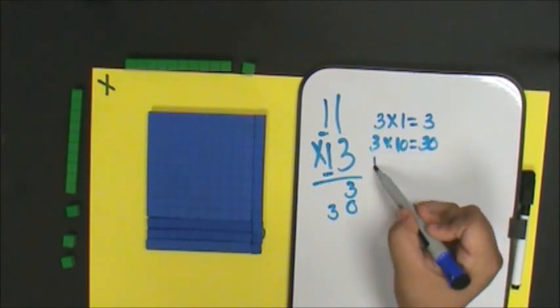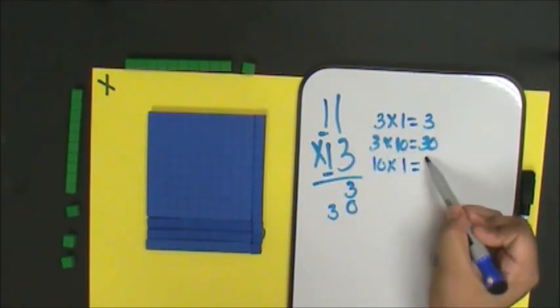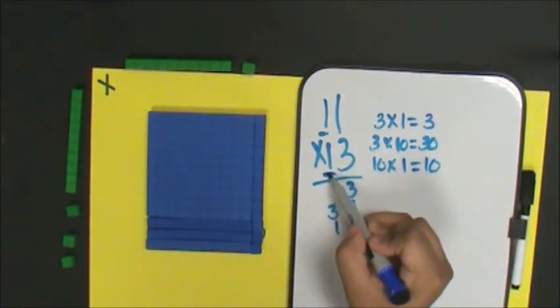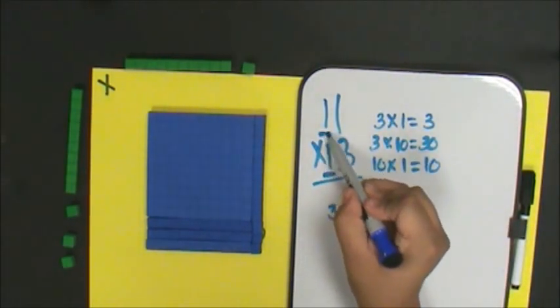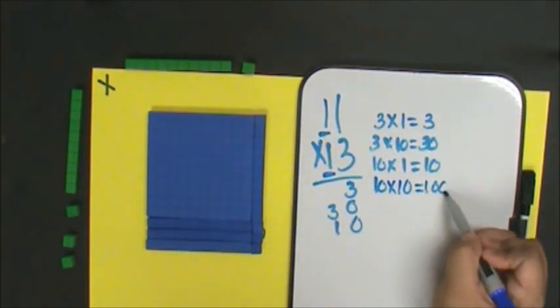1 ten times 1 one is 10. 1 ten times 1 ten is 100.